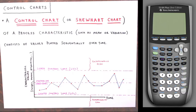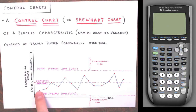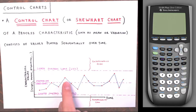A control chart consists of values plotted sequentially over time. The horizontal axis represents time — days, months, seconds, years, whatever — and the vertical axis is the characteristic values, either ranges, means, proportions, standard deviations, or whatever you're recording from your samples. Each connected dot represents one of those values, and today we're doing the X-bar chart, so each dot will be the mean of a sample.